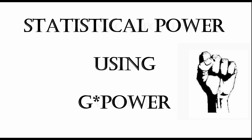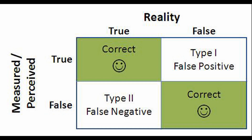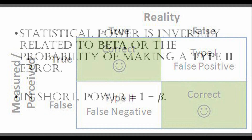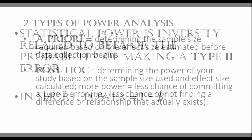So what is statistical power? Power is related to type 2 error, the lesser known of the type errors. Type 2 error is concerned with the equally serious problem of not finding a difference that actually exists. This is opposed to a type 1 error where you find a difference that doesn't actually exist. Statistical power is inversely related to beta, or the probability of making a type 2 error, so in short: power equals 1 minus beta.